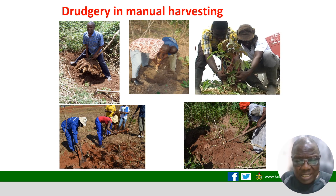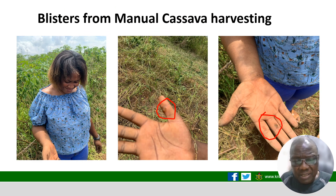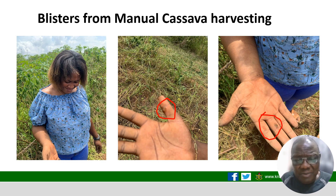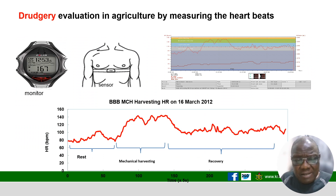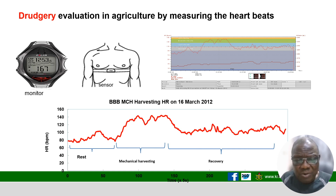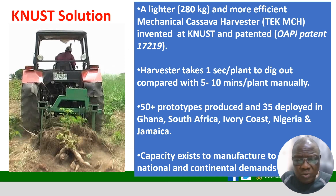This is the way cassava is currently harvested — in a stooped position — and it is so painful it cannot be sustained. There is a picture showing blisters on the palms of ladies who are harvesting cassava. To measure the drudgery, we use heartbeat as a proxy: the higher the heartbeat during physical activity, the more painful and strenuous the activity is, meaning you need to rest longer.